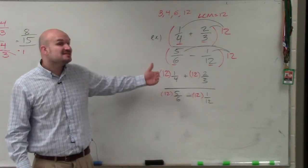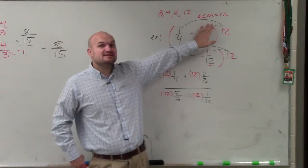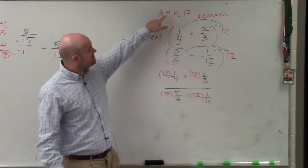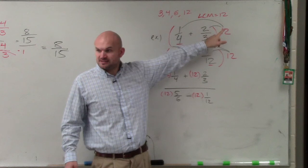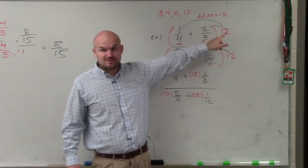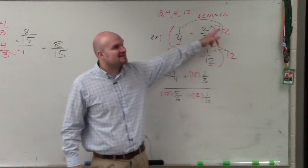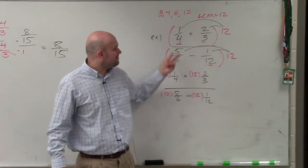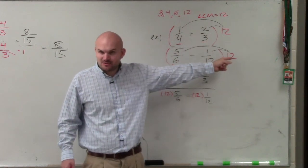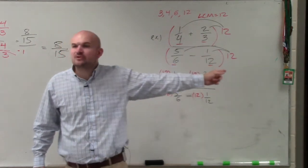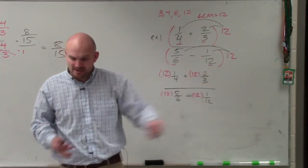Now, what's nice about finding the least common multiple, do you see that every single one of these numbers evenly divides into my least common multiple? So guess what happens? When you multiply every single expression by the least common multiple, every denominator divides into that least common multiple. Since it divides in evenly, we're no longer going to have a denominator. Watch.